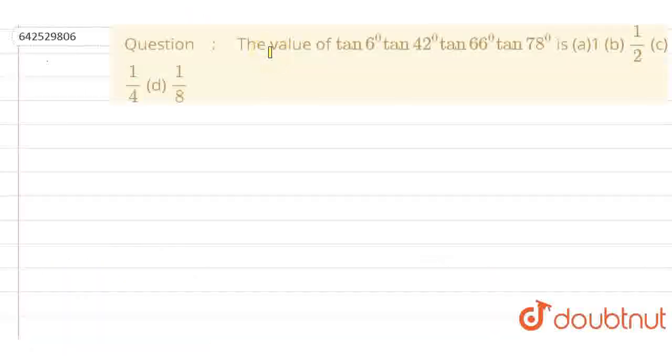Hello everyone, so we have a question. The value of tan 6° tan 42° tan 66° tan 78° is: option A is 1, option B is 1/2, option C is 1/4, and option D is 1/8.